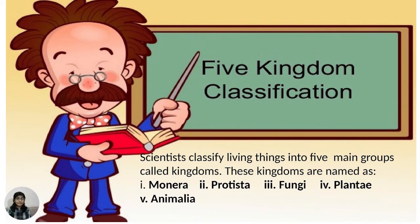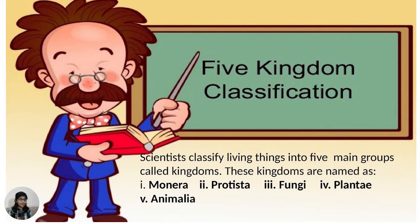Five kingdoms classification: Scientists classify living things into five main groups — Monera, Protista, Fungi, Plantae, and Animalia.